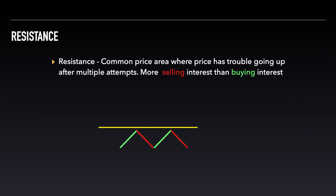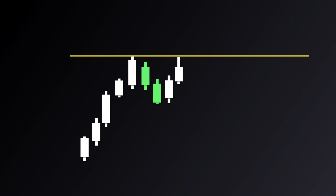Resistance is the same concept — it's just flipped the other way. Resistance is defined as a price area where the stock has trouble going up, and this is due to more selling interest at a specific price level. Resistance is an area where there's a concentration of selling where sellers are more inclined to sell and buyers are less willing to buy.